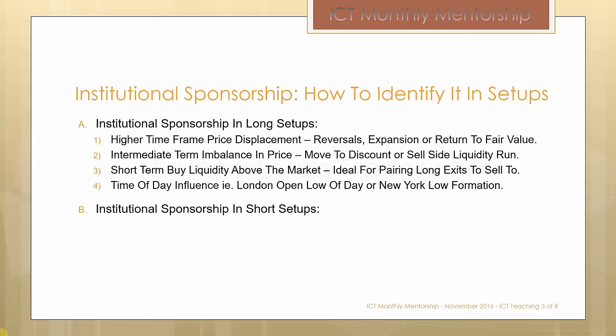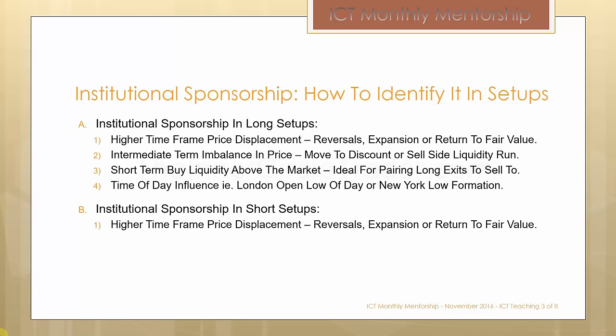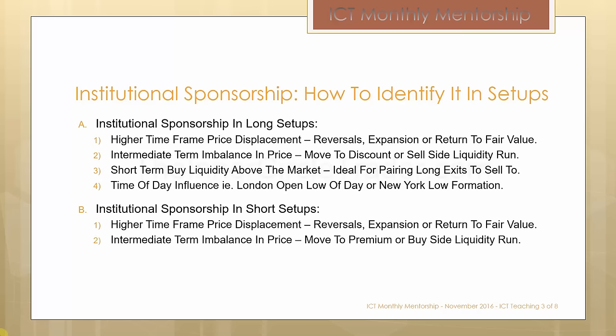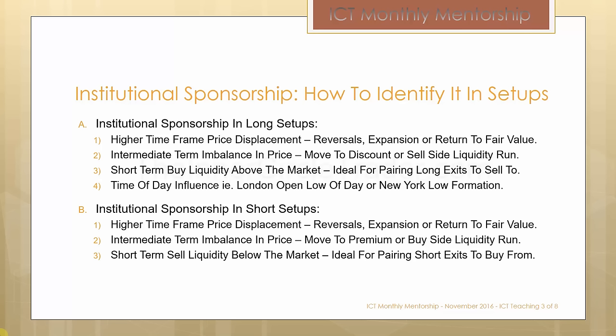Obviously the opposite would be for institutional sponsorship in short setups — much the same way we saw for long setups, it's in reverse. Higher timeframe price displacement coming by way of a reversal, expansion, or return to fair value. An intermediate term imbalance in price sees price move to a premium or move towards buy side liquidity, making a run on the buy stops. Then short term sell liquidity below the marketplace, which is ideal for pairing short exits to cover — those sell stops we're going to be buying from counterparties. We'd be looking for time of day influence: London open high of day or New York high formation.